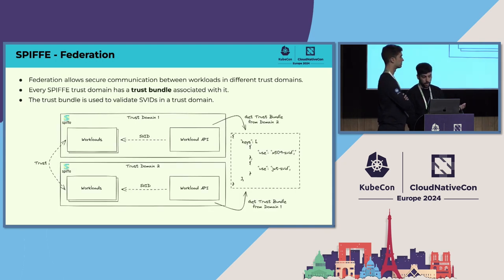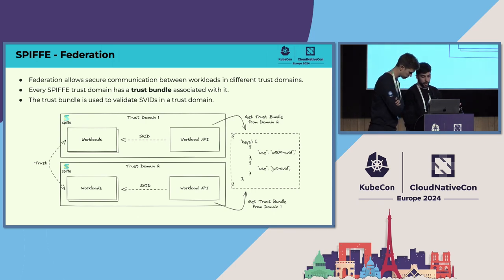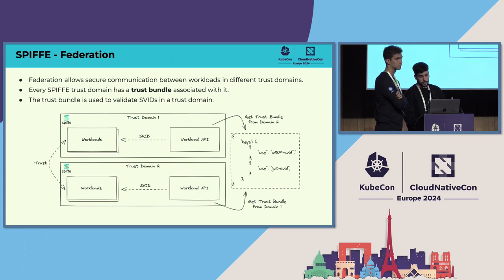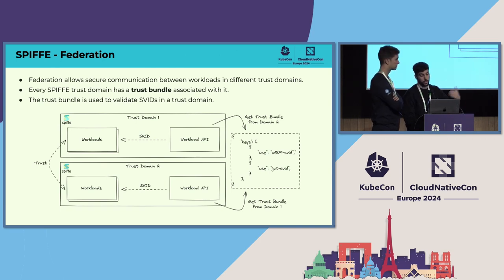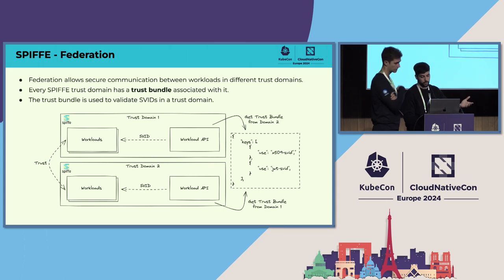Since this talk is about multi-cluster, we are going to have different trust domains, and every trust domain has to trust each other. SPIFFE declares that every Workload API has to expose the trust bundle — the public information of the certification authority issuing certificates — to the rest of the trust domains. With the trust bundle information, you can federate your trust domains into each other, as we will review later in the demo.